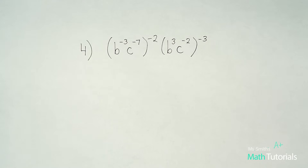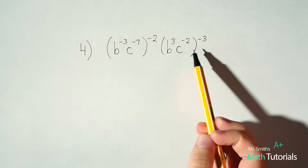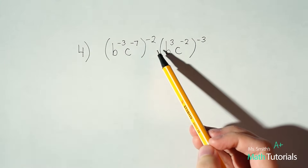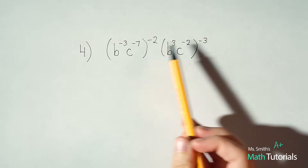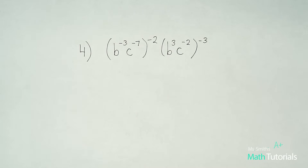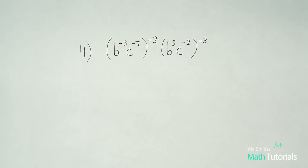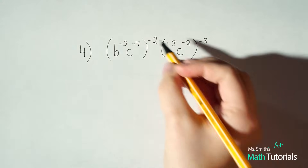Problem number 4 looks pretty similar to the last one, although we have a whole lot of negative exponents. Your gut instinct is probably to go ahead, cross the line, change the sign, and fix some of this. I'm going to suggest we start by just getting rid of these outside exponents first. If at the end we have any negative exponents, we'll deal with that — we'll cross the line, change the sign. Trying to do that right now, in my opinion, overcomplicates it. So we're going to keep going and deal with negatives at the end.